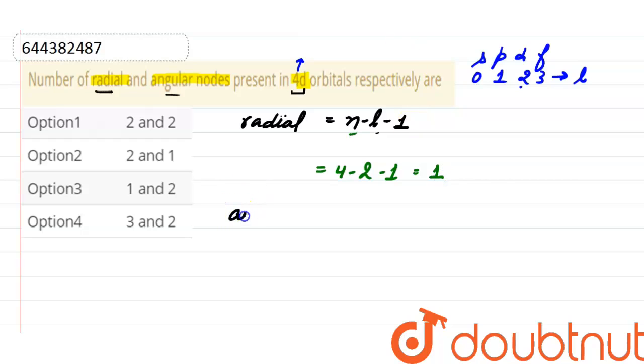Moving on to angular nodes. The number of angular nodes equals the azimuthal quantum number. So here the value of l for 4d orbital is 2, so angular nodes here are 2. And the correct option here is option third, in which radial nodes are 1 and angular nodes are 2.